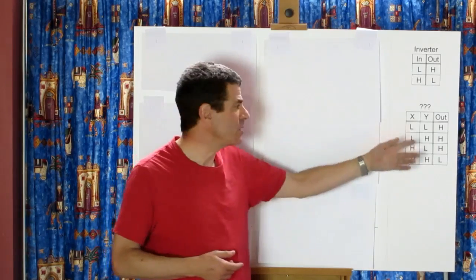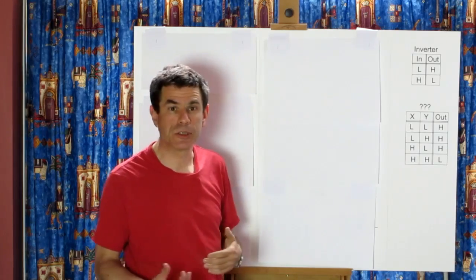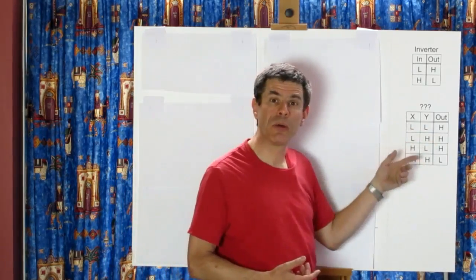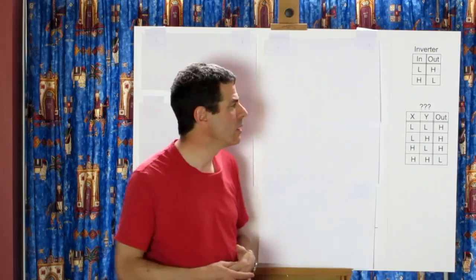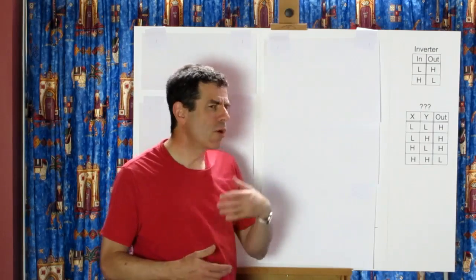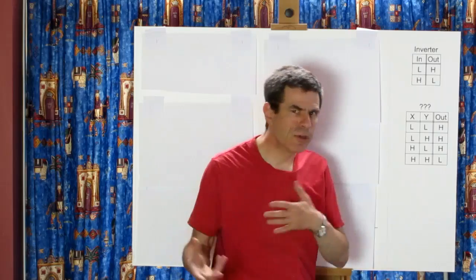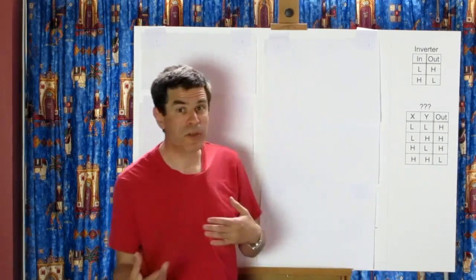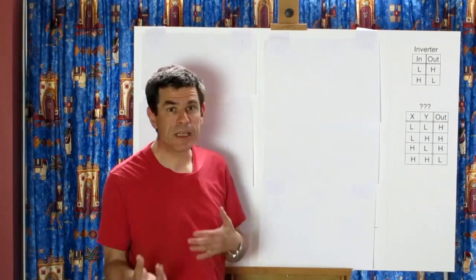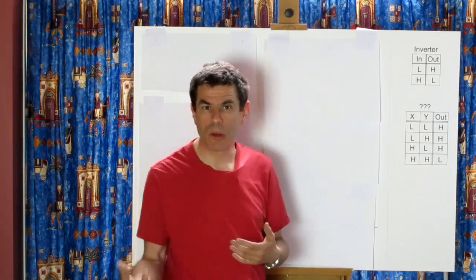Now when we created these tables we were measuring voltages so we filled them in with values of low and high depending on what we measured. In the more abstract world of logic voltages don't really have a place. We need to use other values and we're going to translate these values to 0 and 1.